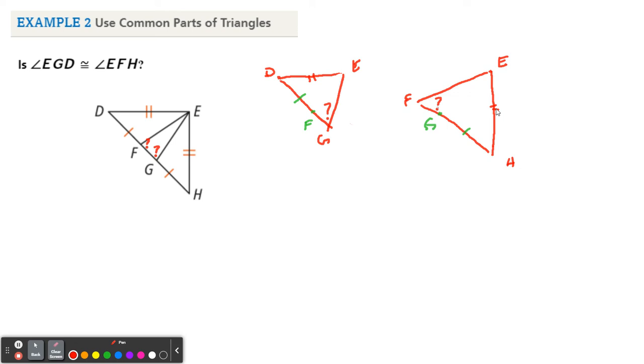Well, in order to prove these two angles congruent, let's try to prove the triangles congruent. So let's prove, so prove, and I'll just name the triangles like this. Triangle EGD is congruent to triangle EFH.